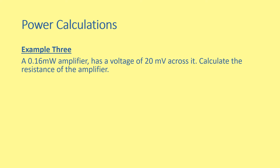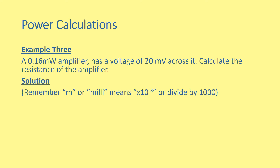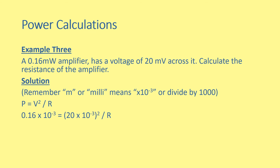Example 3: a 0.16 milliwatt amplifier has a voltage of 20 millivolts across it. Calculate the resistance of the amplifier. We have to watch out for the milli — milli means times 10 to the negative 3, or divided by 1000. One mark for the equation, one mark for the correct substitution. If you don't convert using times 10 to the negative 3 and instead put 0.16 and 20, you would still gain the substitution marks because you showed understanding. But you'll only get the correct answer with the correct conversions, which gives 2.5 ohms.